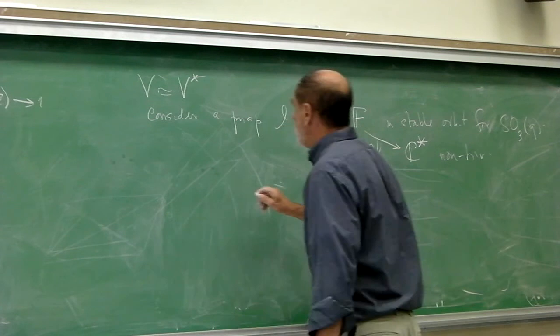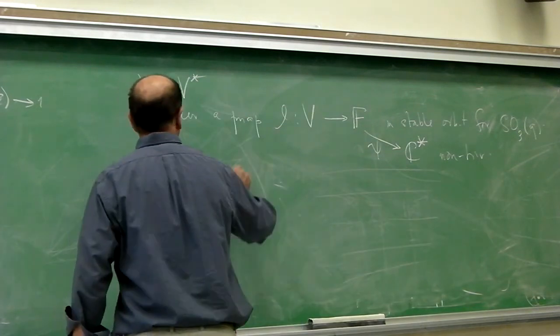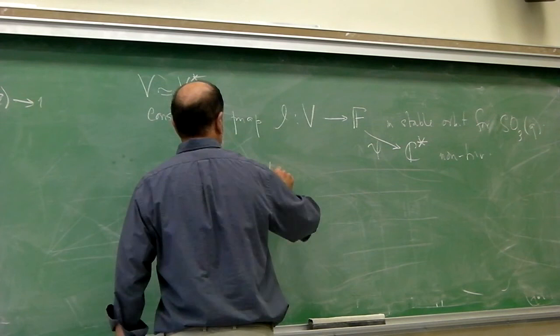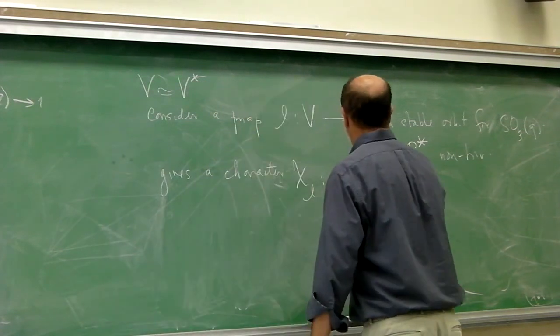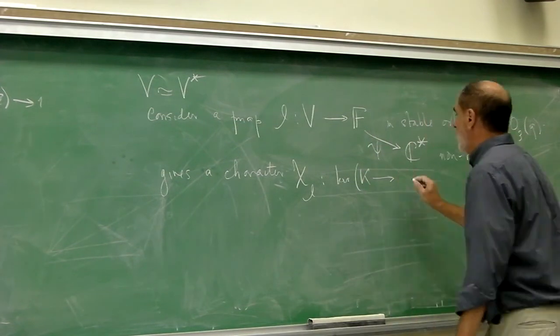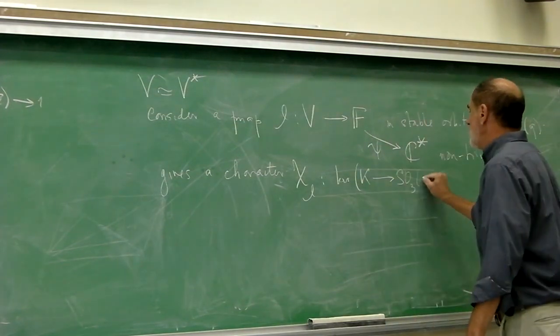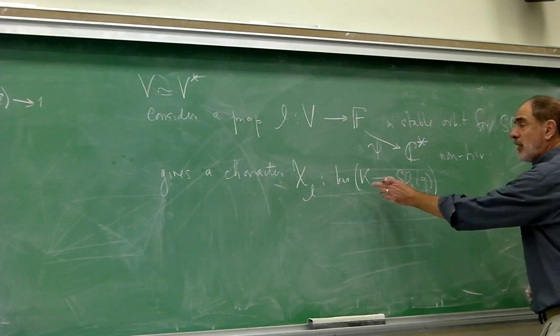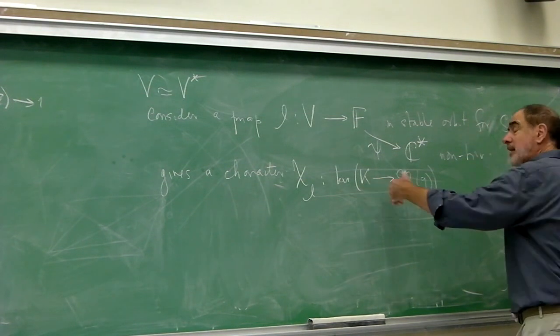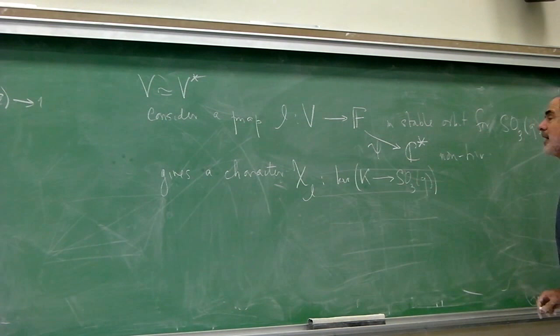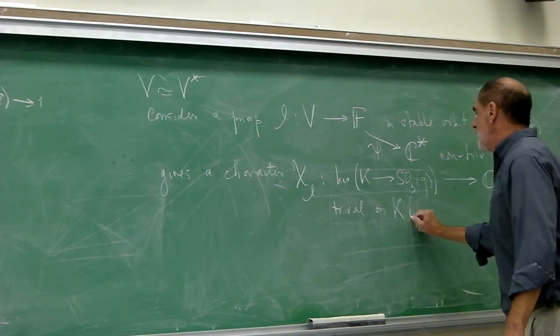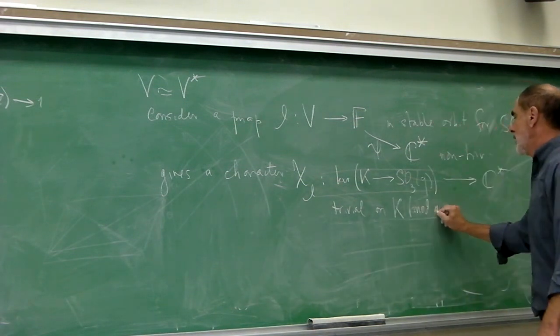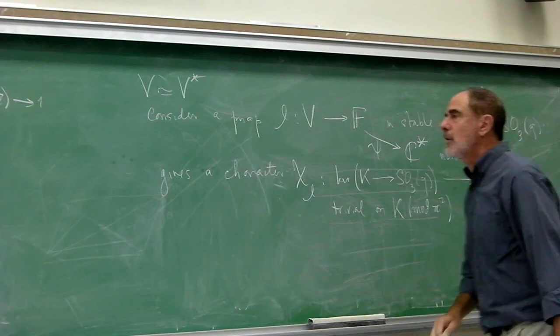So this gives a character, chi L, from the kernel of the map from K to SO3 cubed, which is another open compact subgroup, a little smaller than this, not maximal anymore, like the things congruent to one, to the complex numbers, which is trivial on K mod pi squared. Right? So we view this...